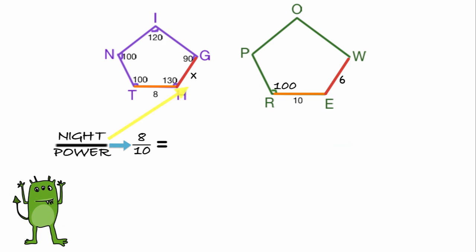The X is located on the polygon night, so we put it across from the 8 in our ratio. And the 6 is in the polygon power, so we would put it across from the 10. We'd cross multiply and simplify that, getting 10X equals 48, or X equals 4.8.